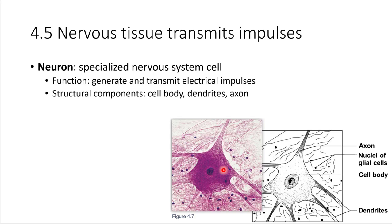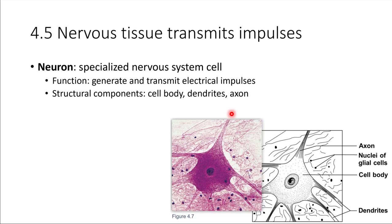In general, neurons have a lot of dendrites, and these are smaller projections. These are projections that carry signals towards the cell body — so this is how the cell receives information, through those dendrites. And then there is usually one longer projection, and that's called an axon. This is the branch that allows the cell to send information. So: receive information through dendrites, send information through the axon. We'll be getting into this in more detail when we talk about the nervous system later in the semester.